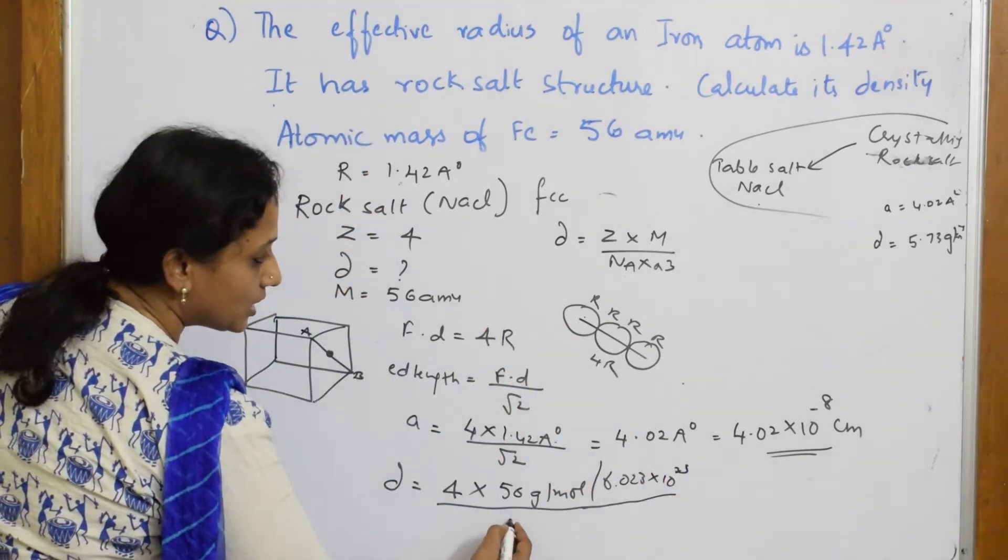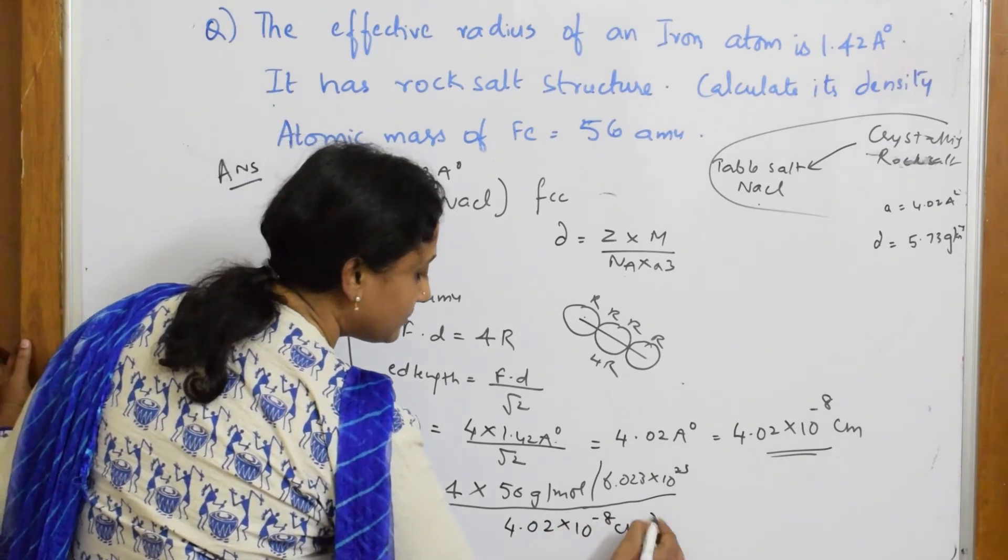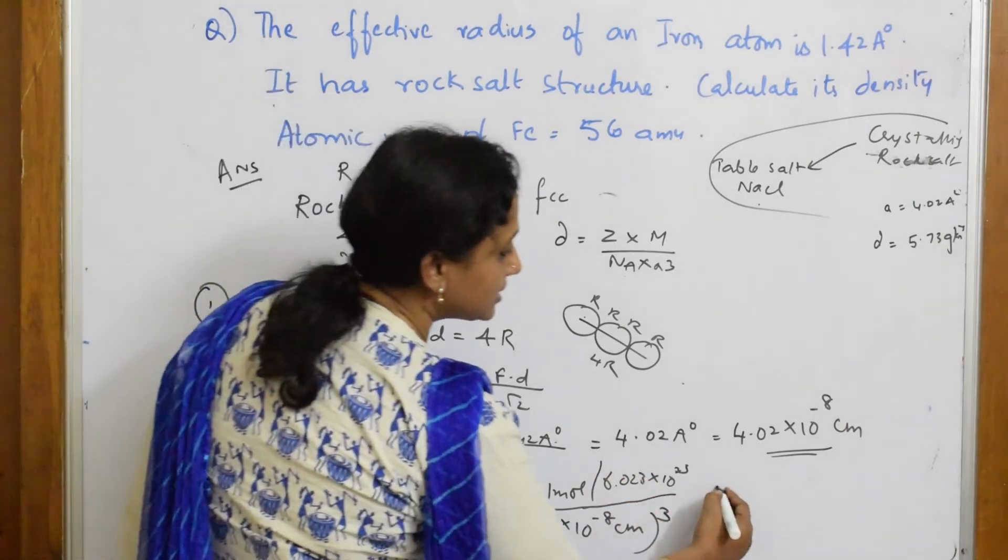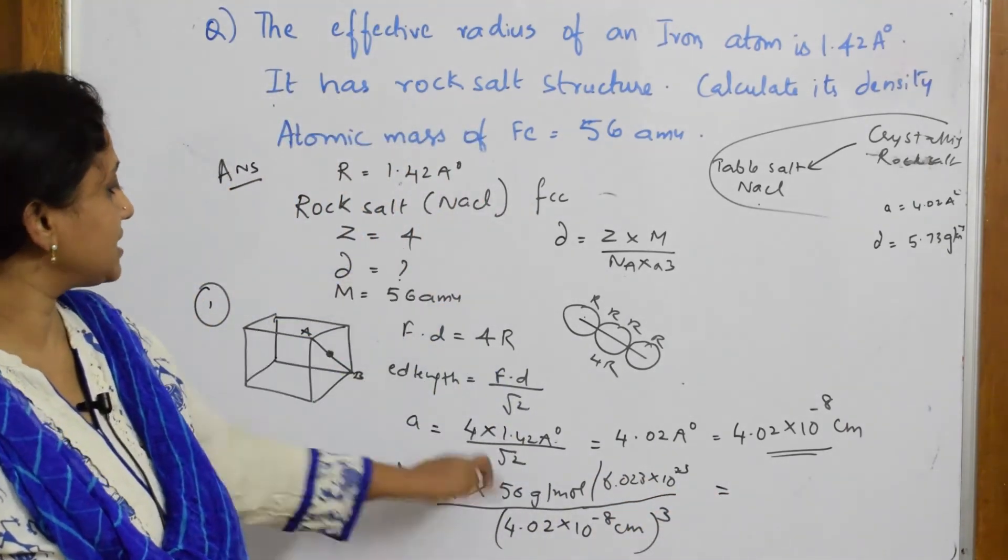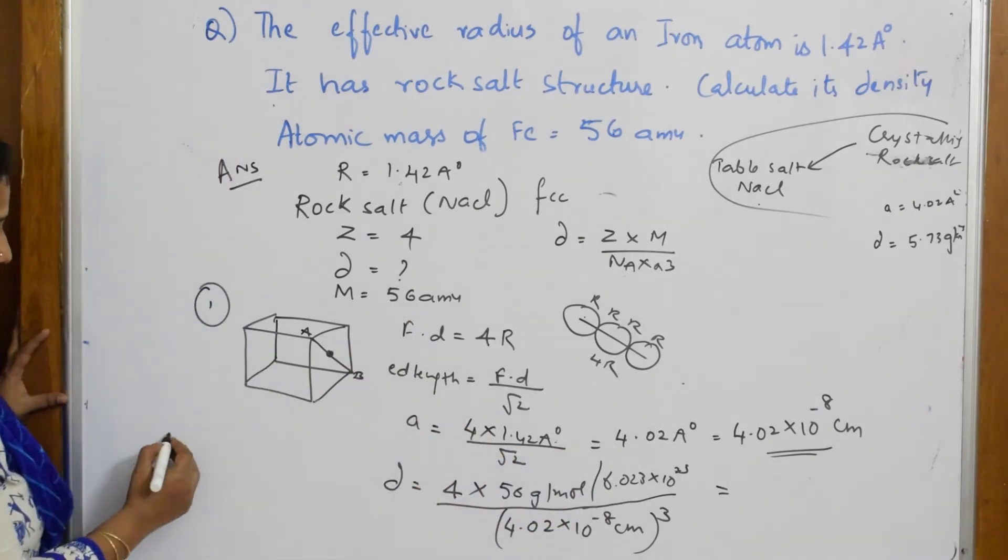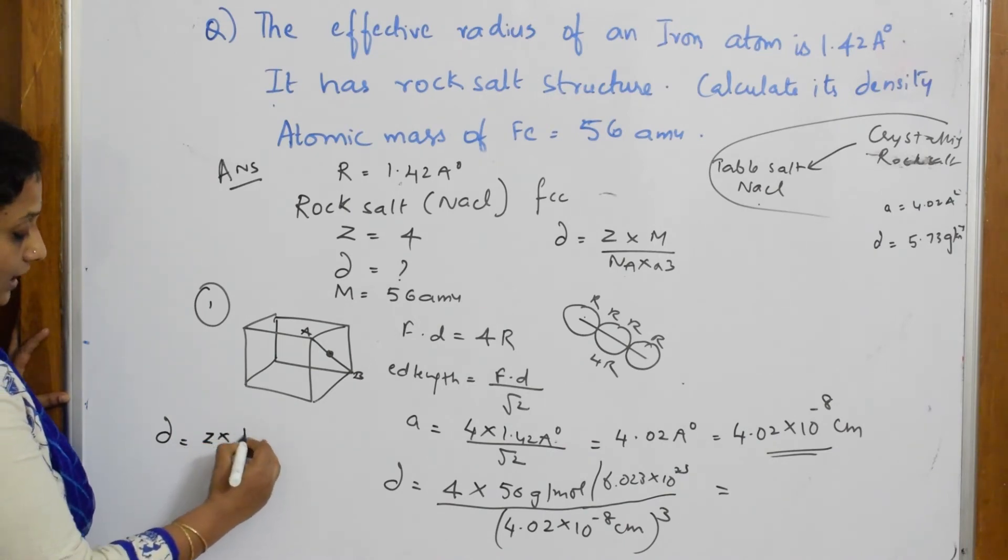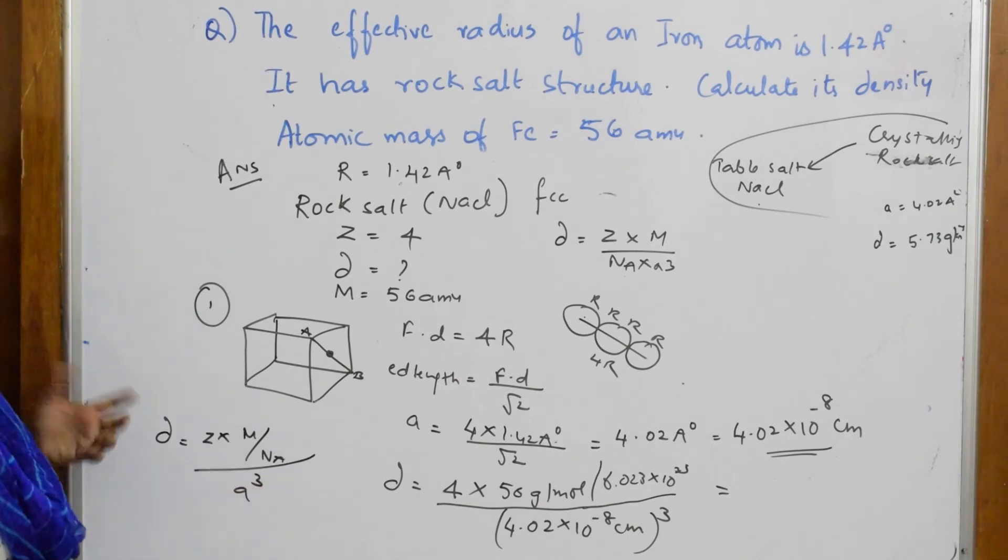What is A cube now? It is 4.02 into 10 raised to the minus 8 centimeter whole cube. So finally I get an answer. If I solve this, just see. 4 I've got from here, 56 I got from here. I have Avogadro number. What did I do here? Actually I did density is equal to Z into M by Na by A cube. This is what I did.